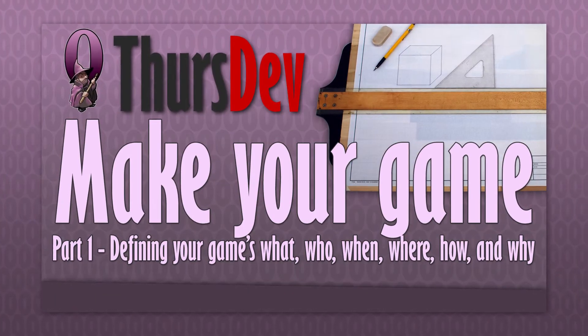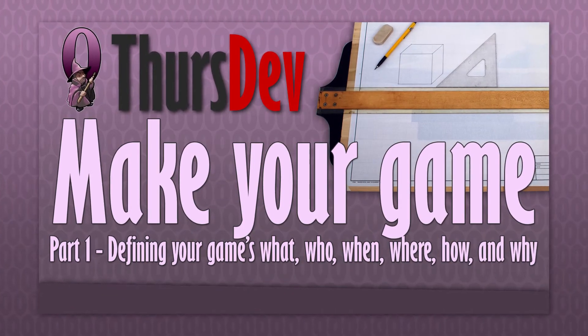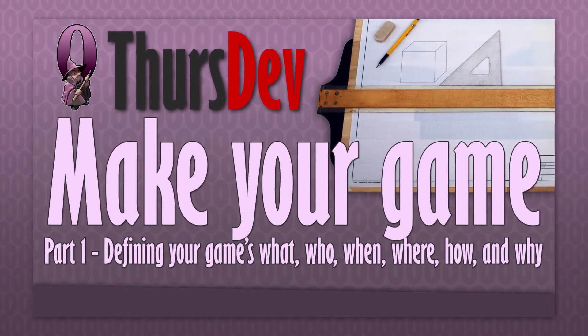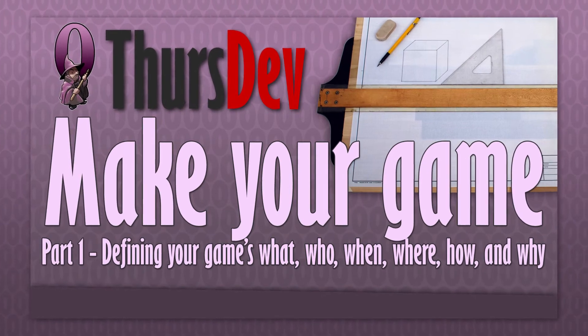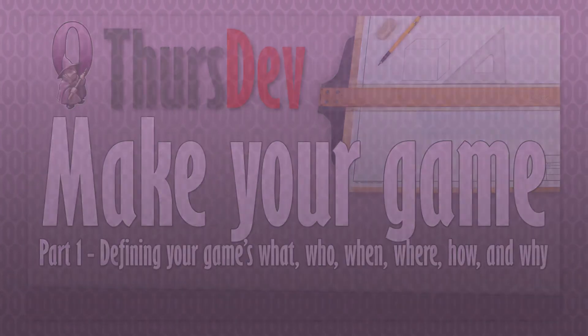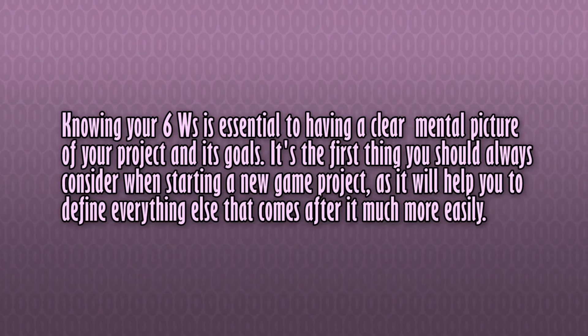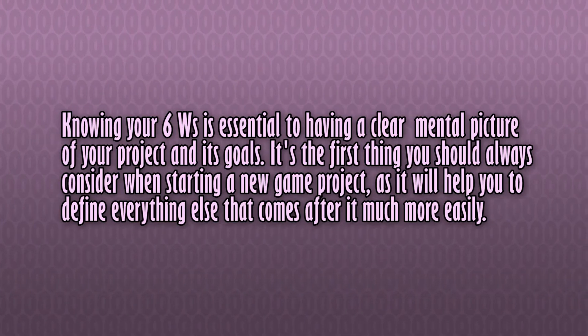Last week we looked into defining the game's six W's — what, who, when, where, how, and why — which should have given us a more clear idea of what our game should be.